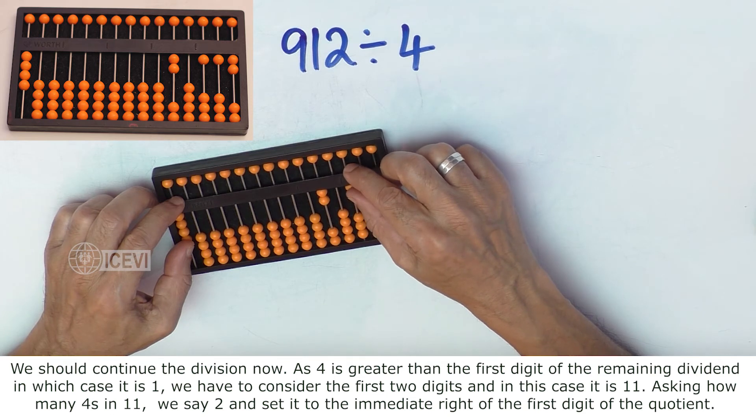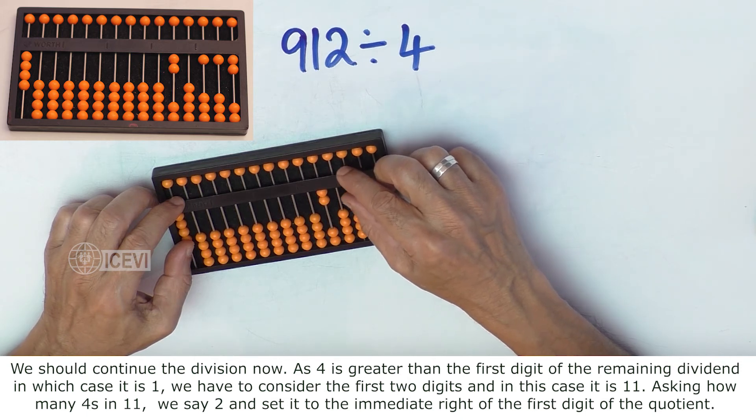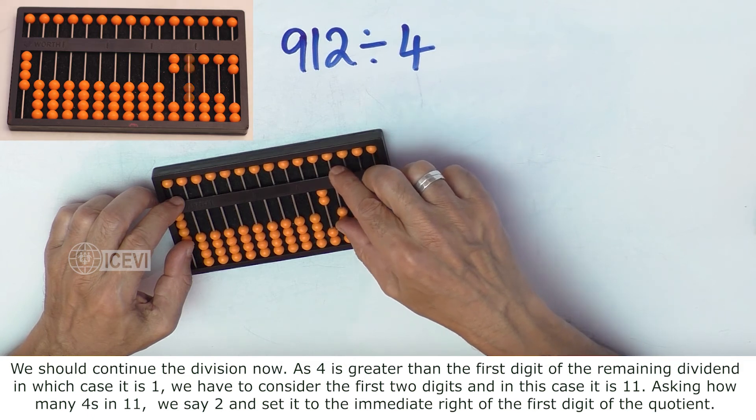Now asking how many 4's in 11, we say 2 and set the 2 to the immediate right of the first digit of the quotient.